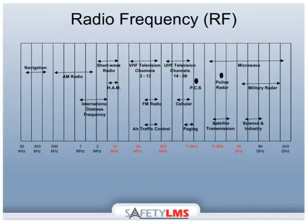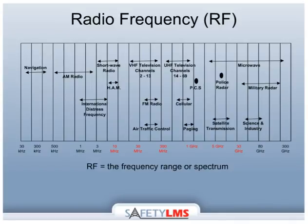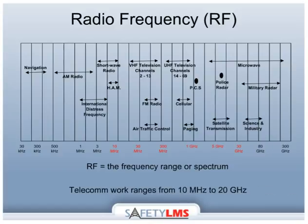In the next few slides, we will cover some definitions that are crucial to the understanding of RF and EME. Radiofrequency, or RF, is the frequency range or spectrum. The spectrum range is extensive and can span anywhere from 1 Hz all the way to 300 GHz. The general spectrum for telecommunications workers will involve a range from 10 MHz to 20 GHz.